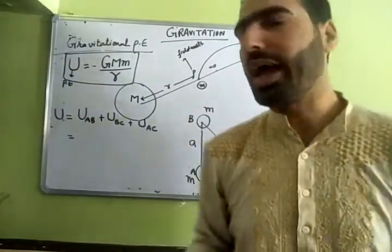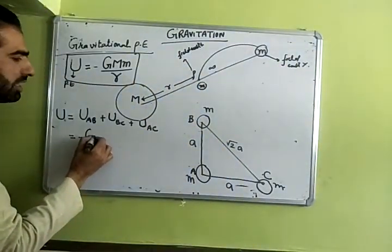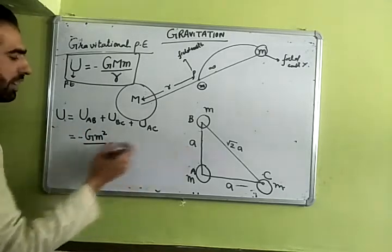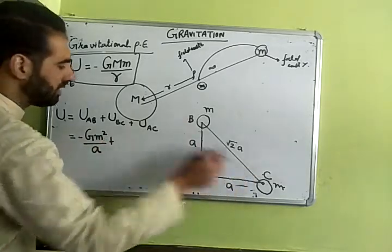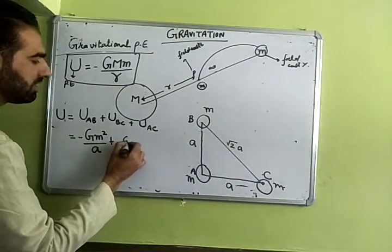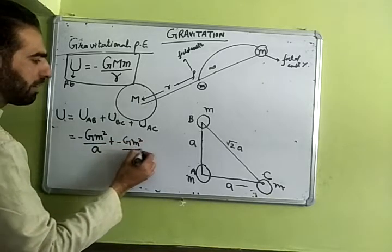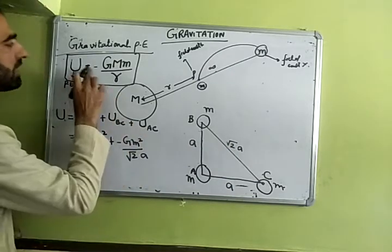You know the gravitational potential energy of a system of two bodies is equal to minus G M M. Since the masses are equal, I will write as M squared divided by - what is the distance? It is a. Plus potential energy BC - minus G M squared divided by what is the distance? Root 2 a.